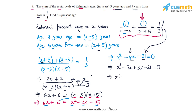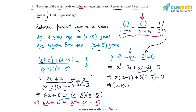From the first pair of terms, take x common to get x(x - 7). From the second pair, take 3 common to get 3(x - 7). So we get (x + 3)(x - 7) = 0, which means either x = -3 or x = 7.